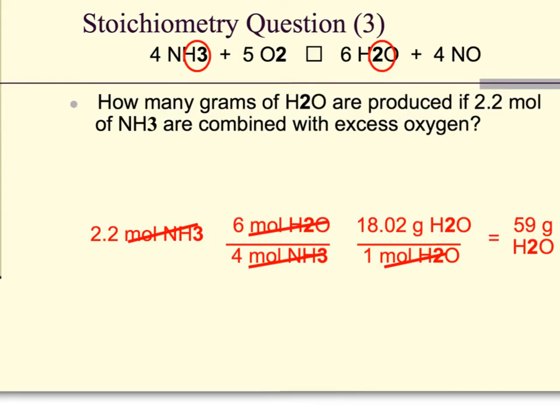We will plug our numbers into our equation from the previous slide. We have our given moles of chemical A times our coefficient ratio. We have 4 moles of NH3 on bottom, and we get that because of the coefficient 4 in front of NH3 on our equation. We have 6 moles of H2O on top, and we have that because 6 is our coefficient.